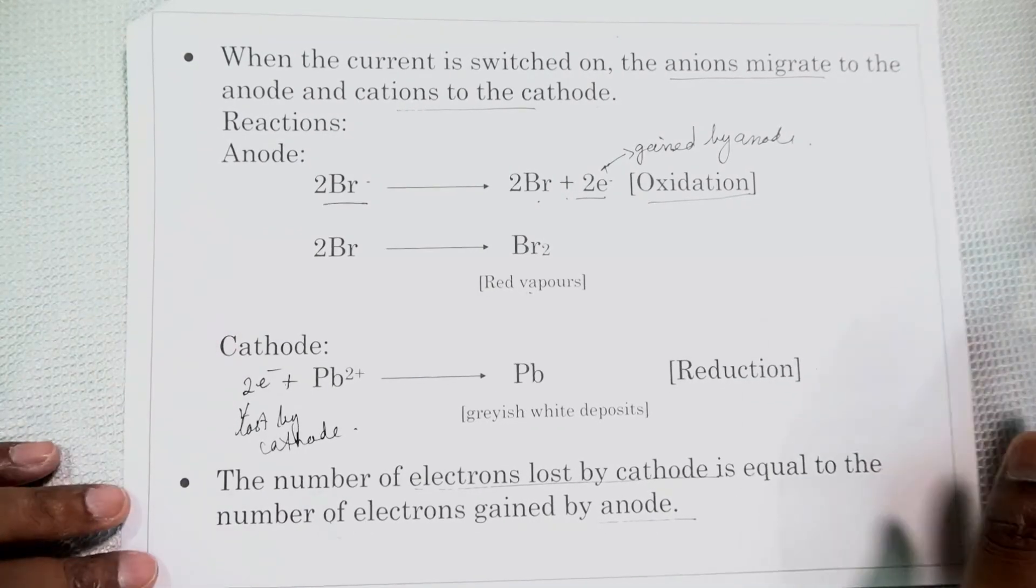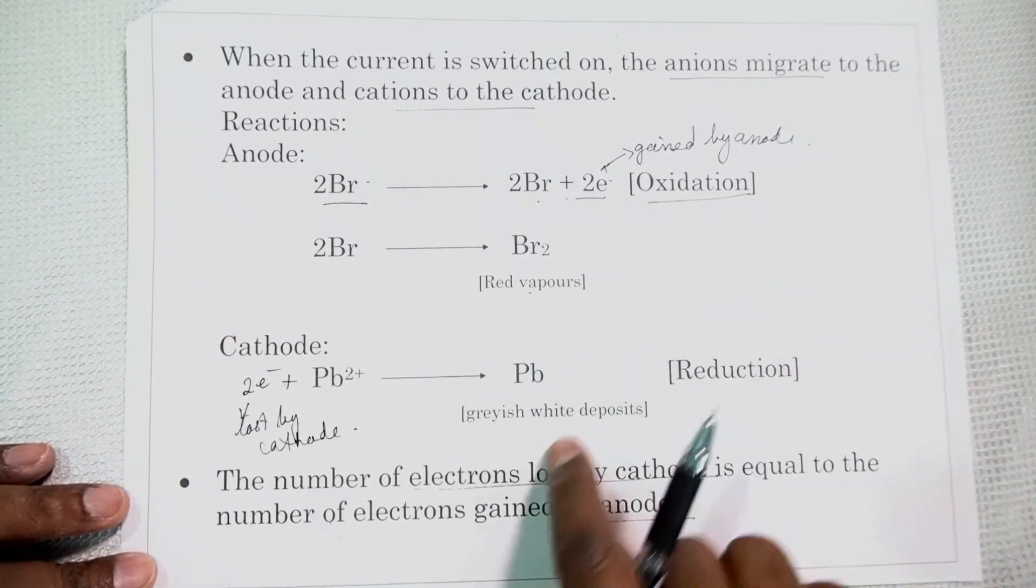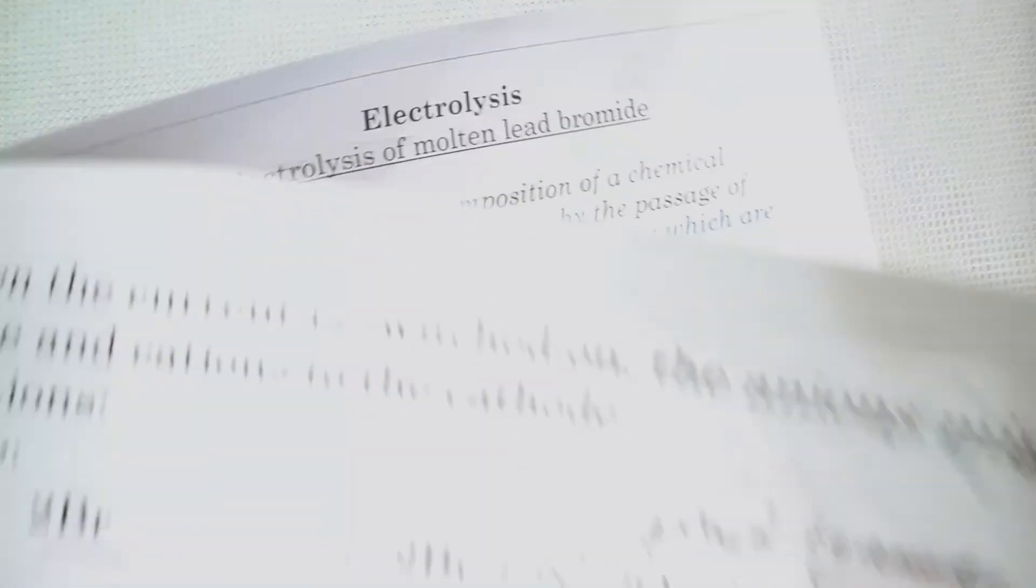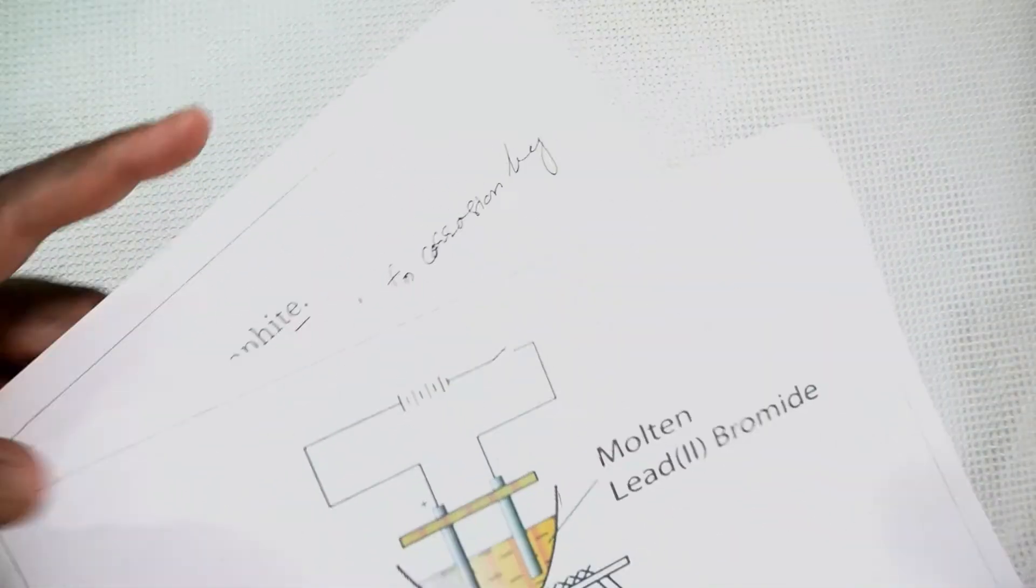So lead bromide, two products are obtained. At anode red vapors of bromine and at cathode grayish white metal of lead is deposited. Now you can see this in the diagram.